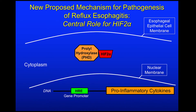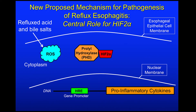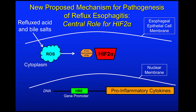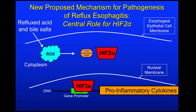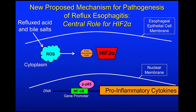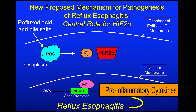Based on these findings, we propose the following mechanism for the pathogenesis of reflux esophagitis in which HIF2-alpha plays a central role. Instead of the traditional notion that acid causes a chemical burn, our studies suggest that reflux acid and bile salts cause esophageal epithelial cells to produce reactive oxygen species. These reactive oxygen species decrease prolyl hydroxylase activity, which enables HIF2-alpha to accumulate in the cytoplasm. The HIF2-alpha then translocates to the nucleus where it stimulates the production of pro-inflammatory cytokines. HIF2-alpha also regulates the activity of phospho-P65 and enables it to translocate to the nucleus and stimulate the production of more pro-inflammatory cytokines that mediate the development of reflux esophagitis.